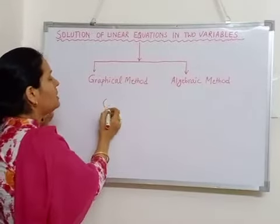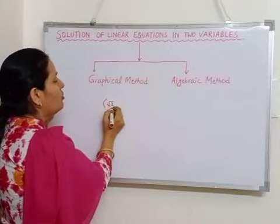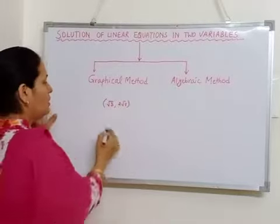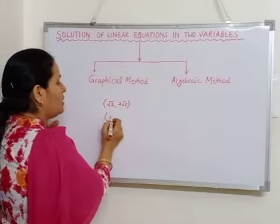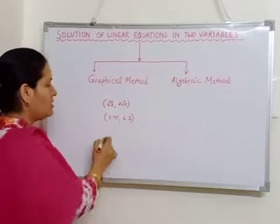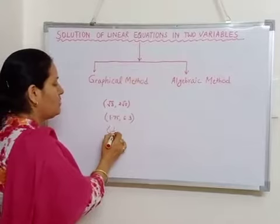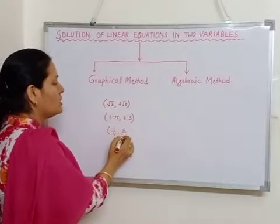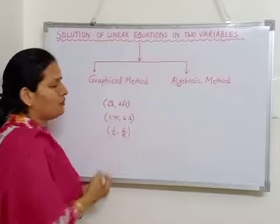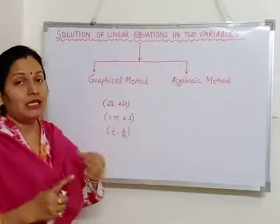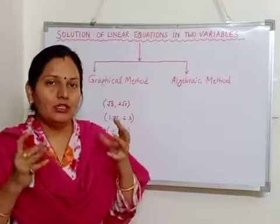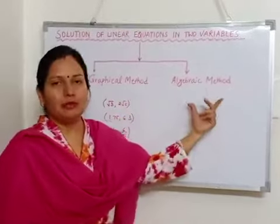Non-integral coordinates means if the number is in the form of a root, or it is in the form of a decimal number — like 1.75 or 6.3 — or it is in the form of a fraction, like 1/4 or 6/15. If the coordinates are in this form, we can locate them on the graph paper but we might make mistakes. So instead of that, we can go to the algebraic method.